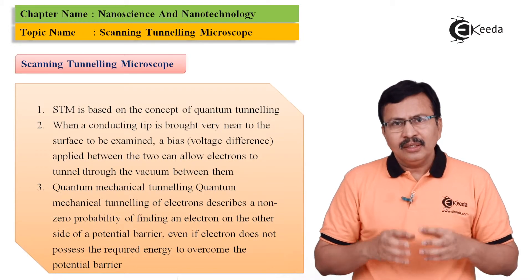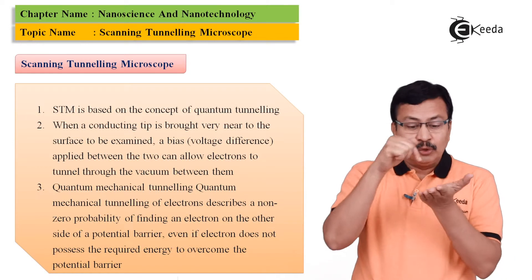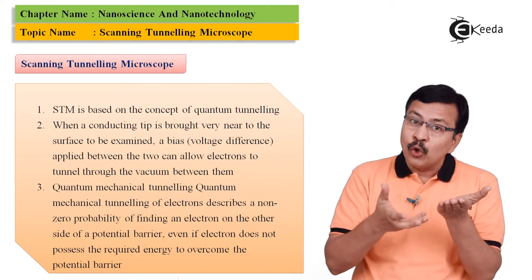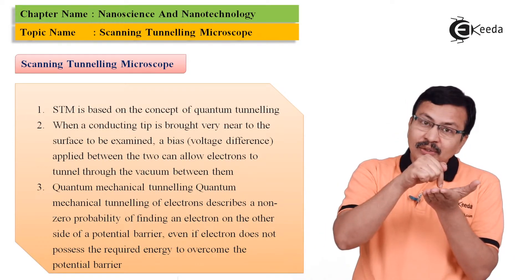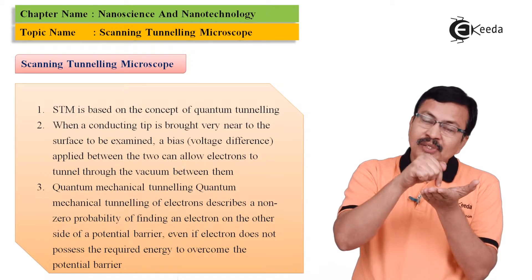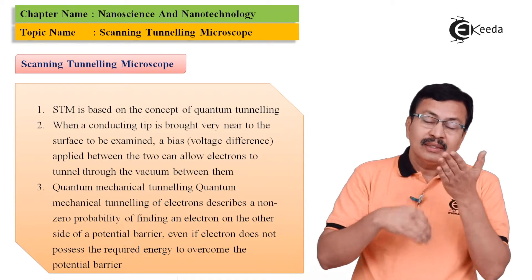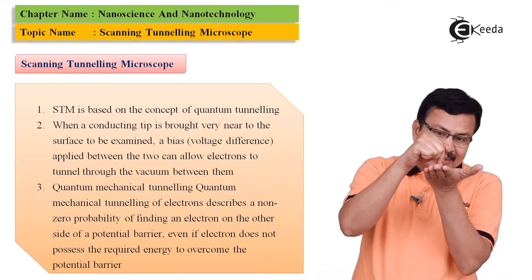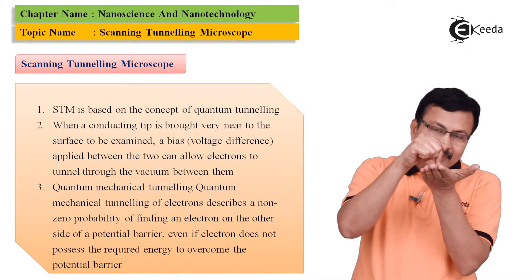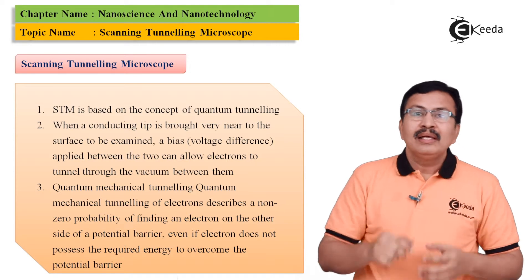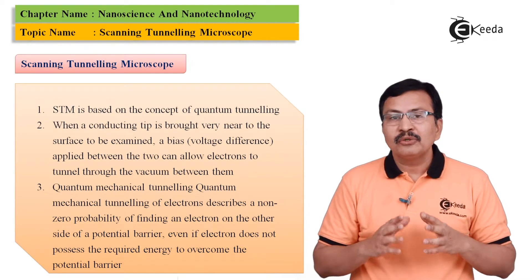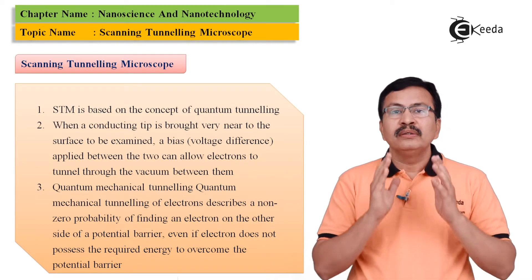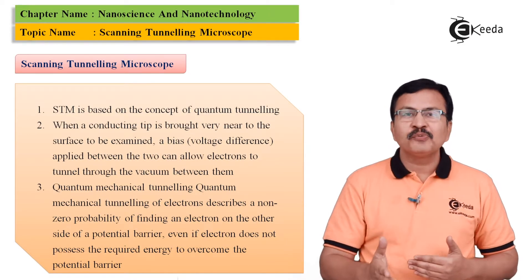Now if you want to say that do the electrons on their own have an energy to tunnel through this potential barrier? The fact which I am saying potential barrier is the potential barrier that is existing between the tip and the surface and definitely the electrons do not have the energy to overcome this potential barrier.